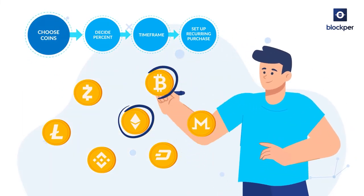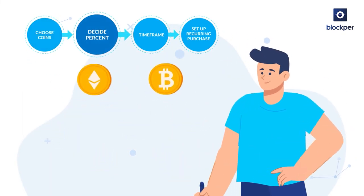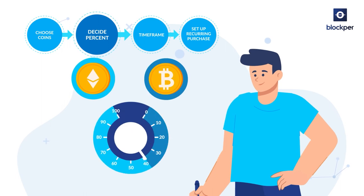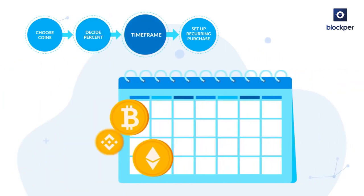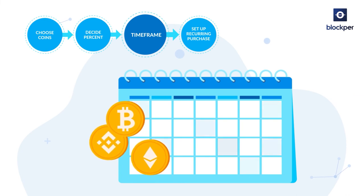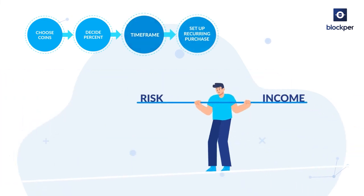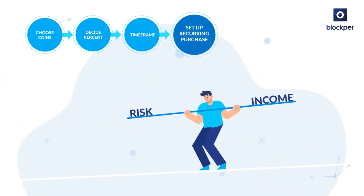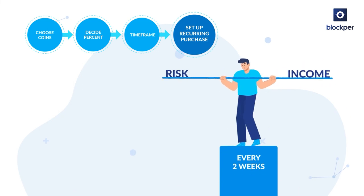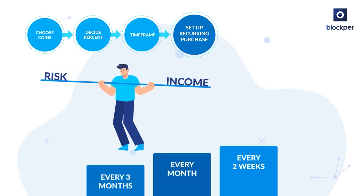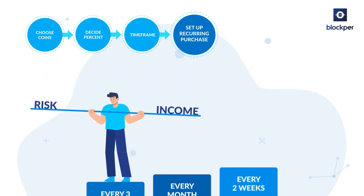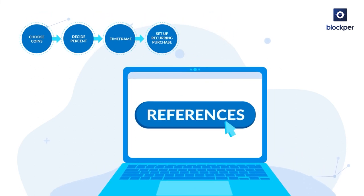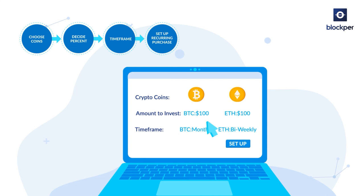Next, decide what percent of every recurring purchase you would like to distribute to each coin you chose. The third step is to decide on time frames for when you would like to buy, based on your income and risk tolerance — it could be every two weeks, every month, or even every three months. Finally, set up your recurring purchases. Our recommended exchanges in the reference section already have this ability set up, so all you have to do is sign up and start.